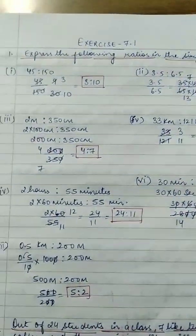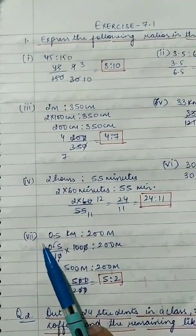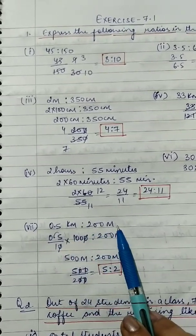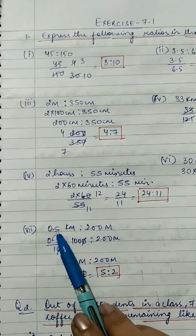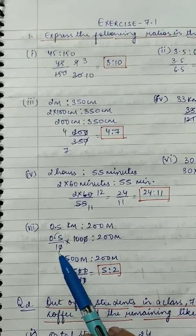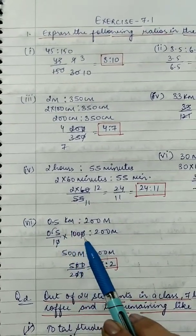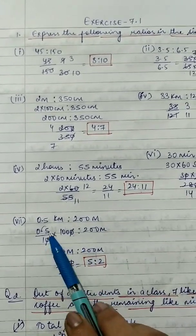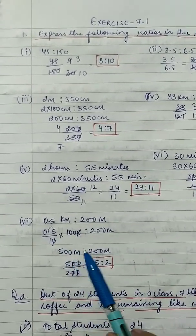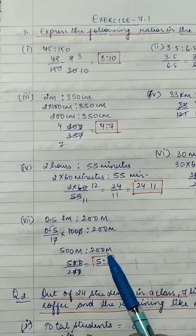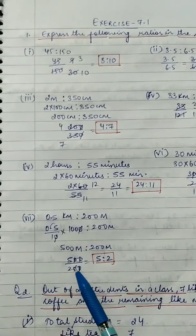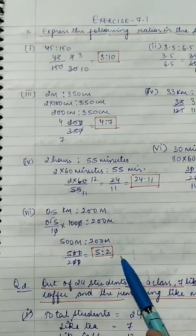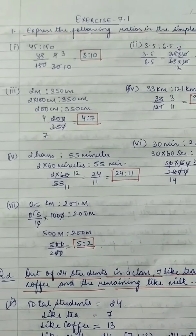Part 7: 0.5 km:200 m. Convert km to meters — remove the decimal and write 10 in the denominator, then multiply by 1000, giving 500 m. So 500 m:200 m — cancel the zeros to get 5:2. That is your answer.